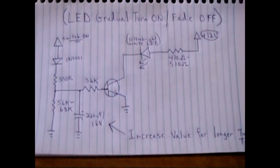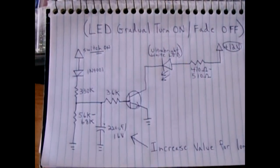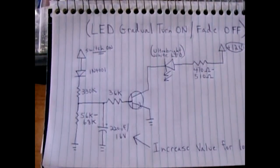In this video I'm going to show you a very simple circuit that you can use to turn on an LED very gradually and then when power is removed it will gradually fade off.